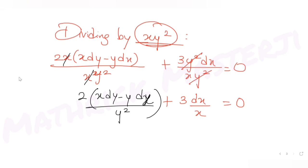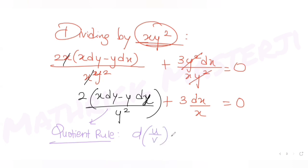Looking at the expression (x dy minus y dx)/y², this reminds us of the quotient rule from differentiation. The quotient rule says: d(u/v) equals (v du minus u dv) divided by v². Here v² is y², so v should be y.